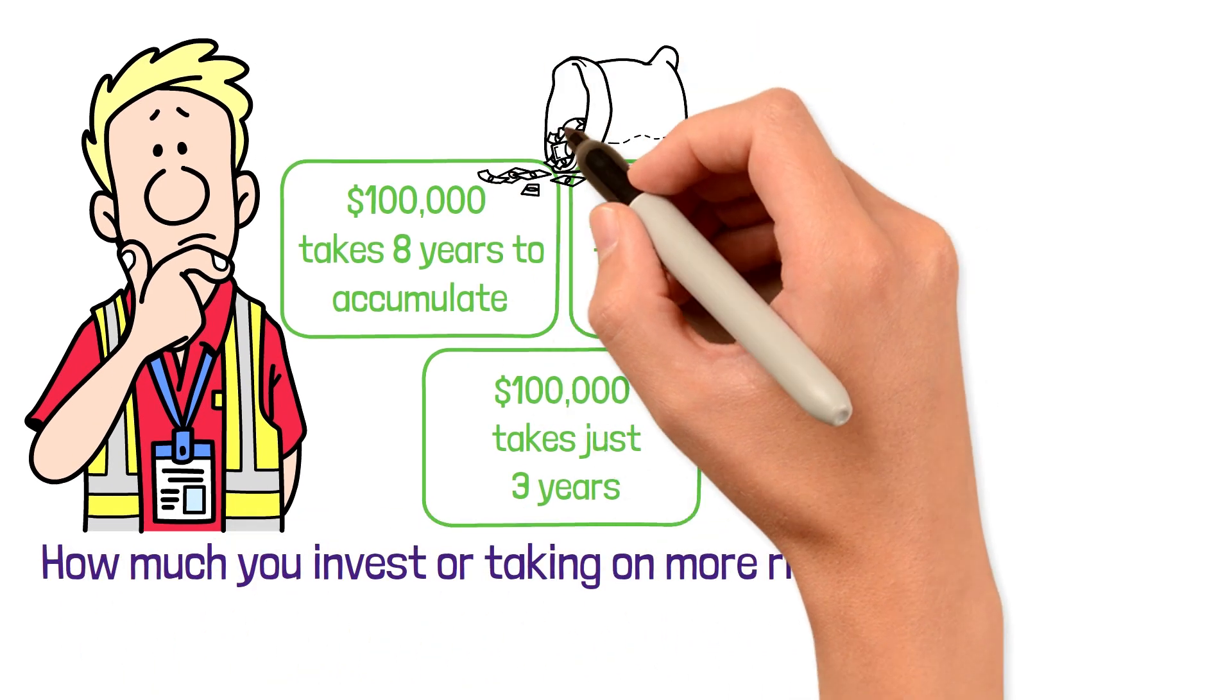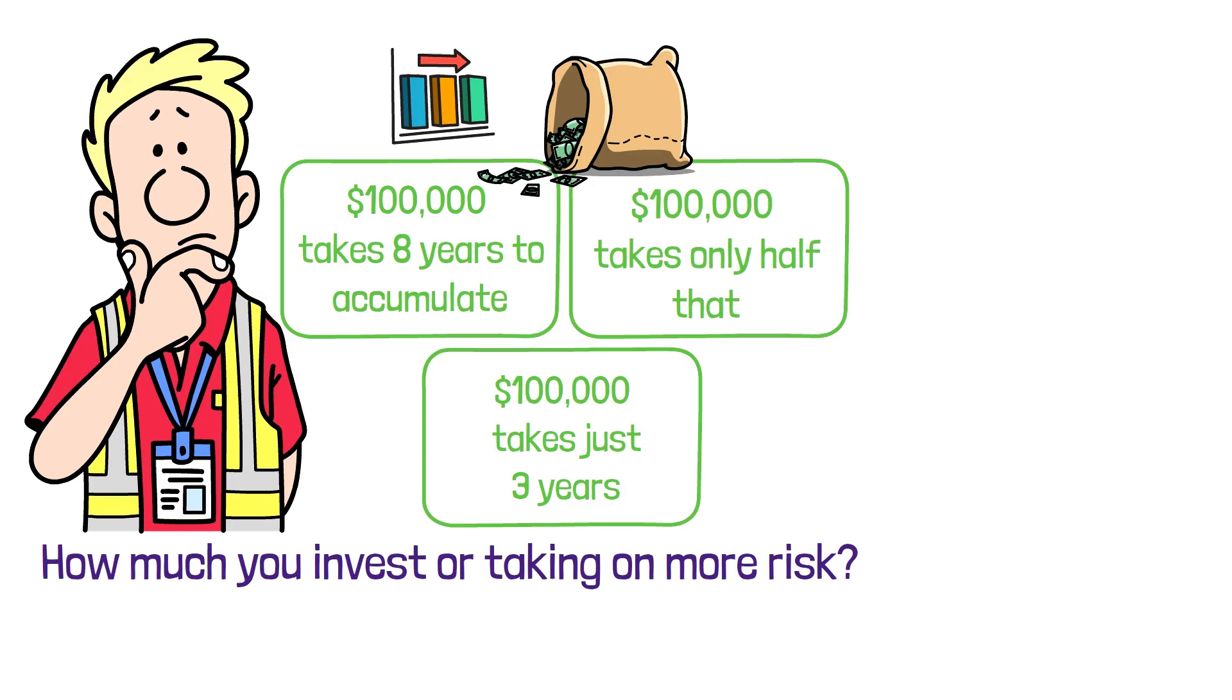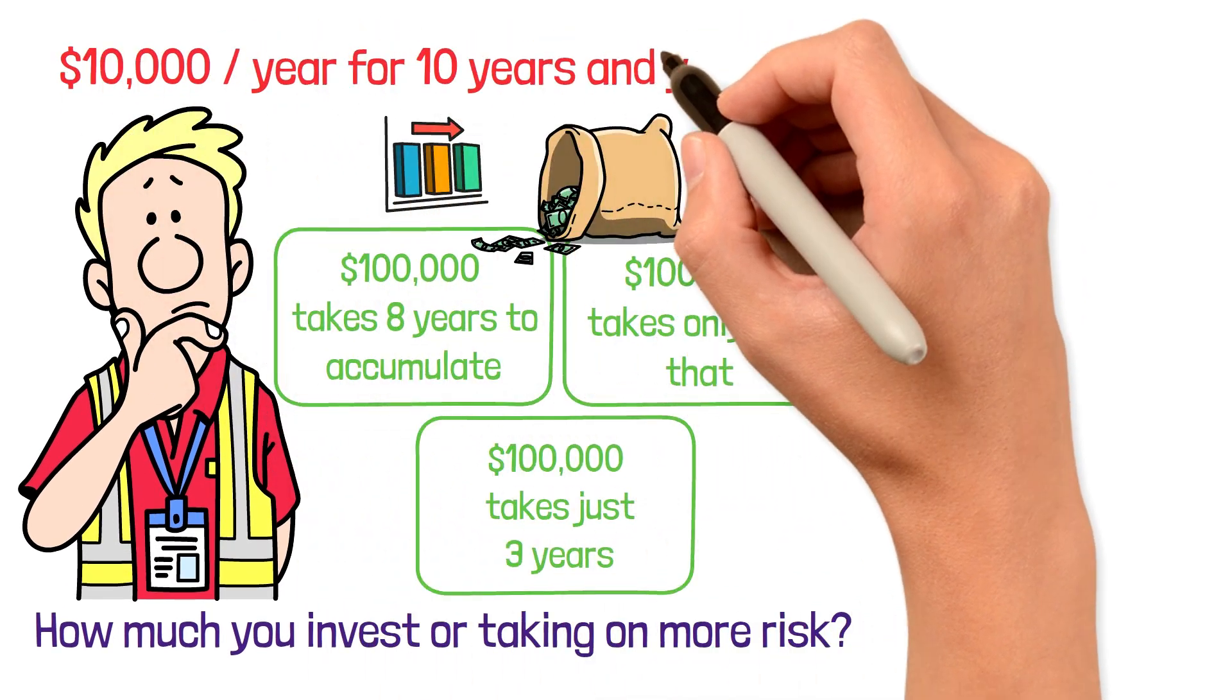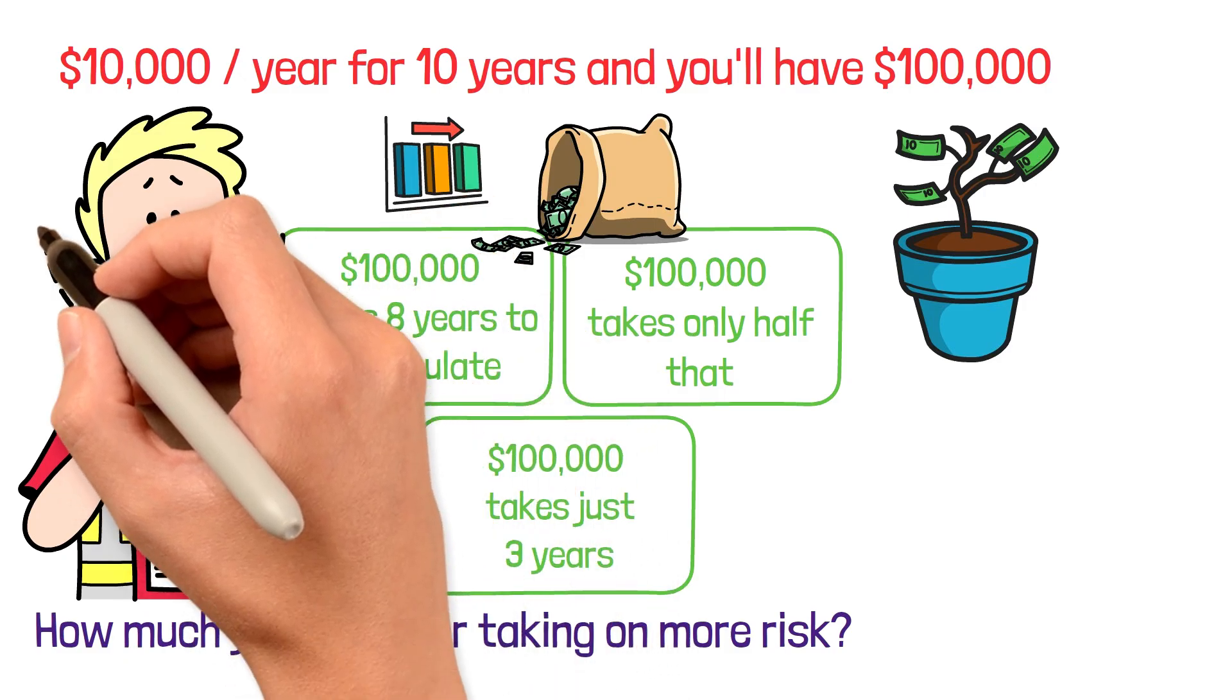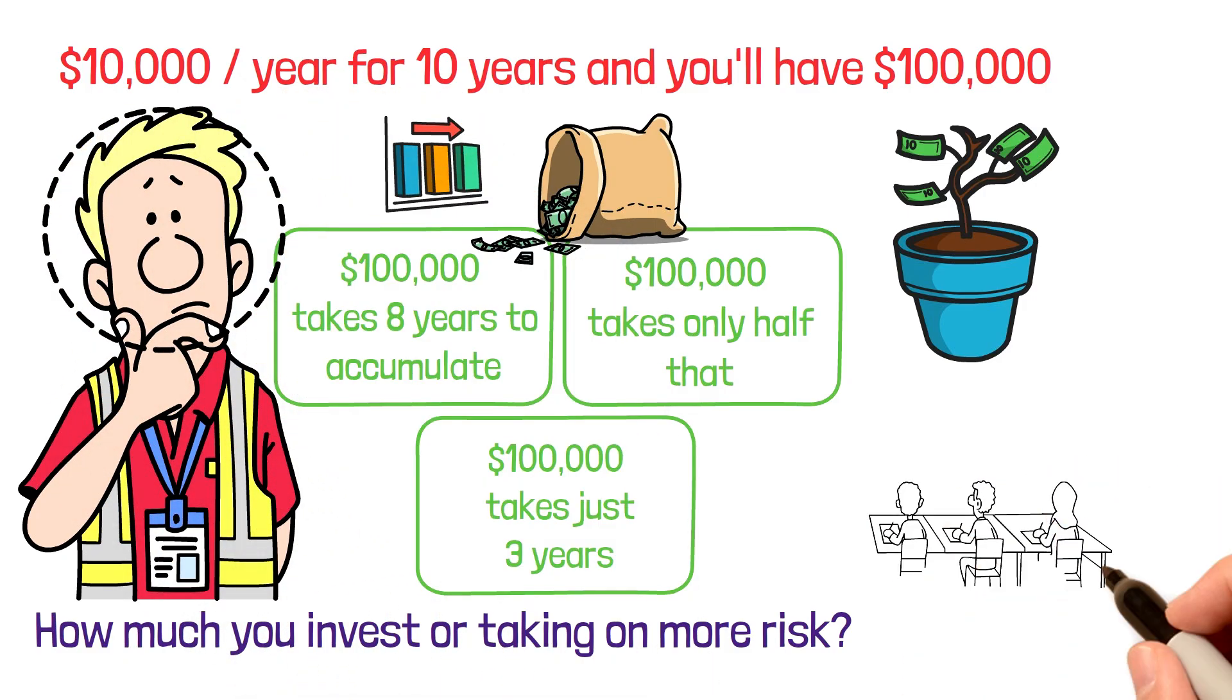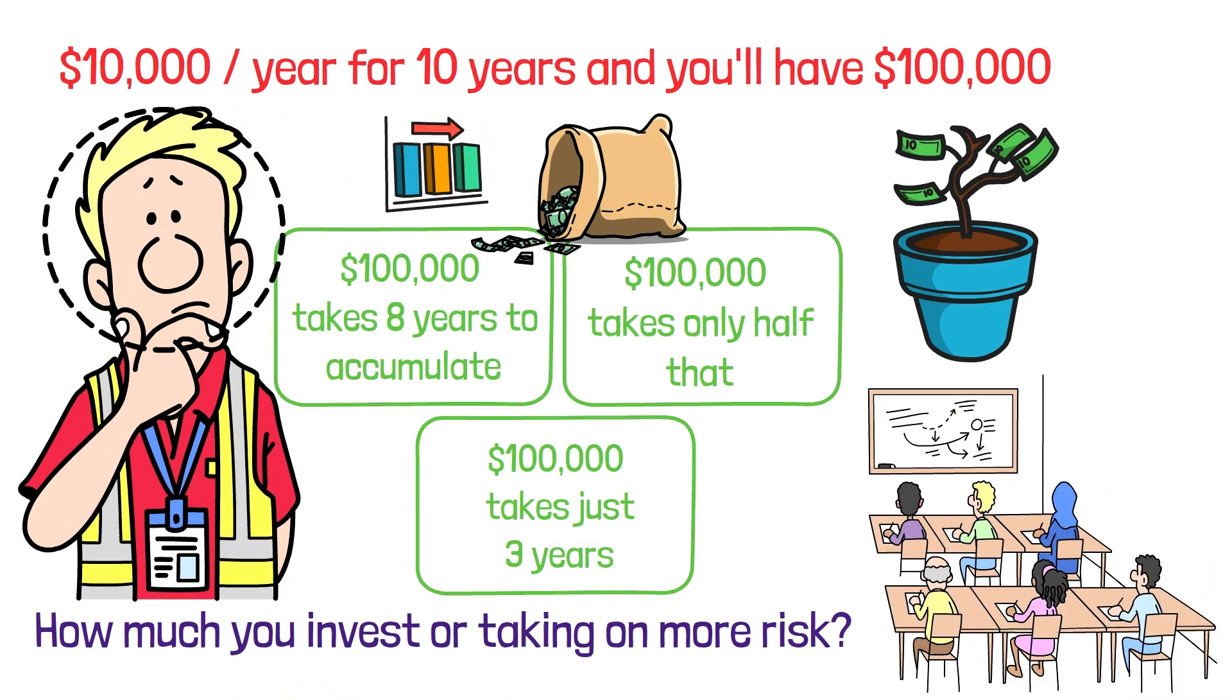Most people think building wealth is linear, save $10,000 per year for 10 years and you'll have $100,000. But that's not how compound interest works. The reality is far more powerful and surprising than anything they taught you in school.